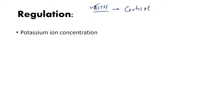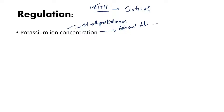So the most potent regulator of aldosterone is the potassium ion concentration. Whenever the potassium ion concentration is increasing — that is whenever there is hyperkalemia — this increased potassium ion concentration is going to directly stimulate the adrenal cortex, and the adrenal cortex is going to increase the secretion of aldosterone. So remember: the most potent regulator of aldosterone is hyperkalemia.